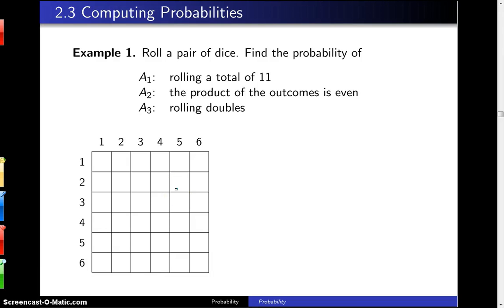So the question here is roll a pair of dice, find the probability of three different events.